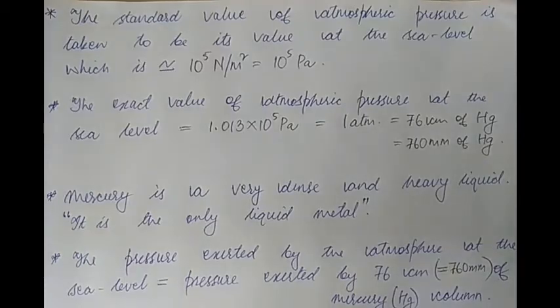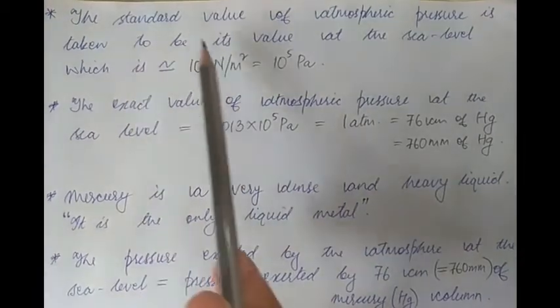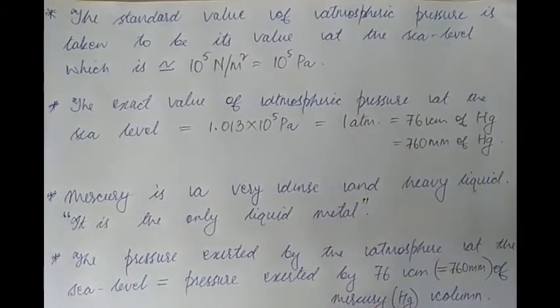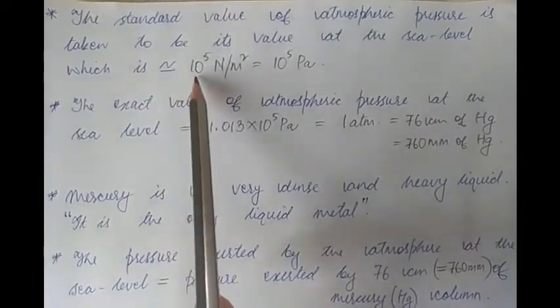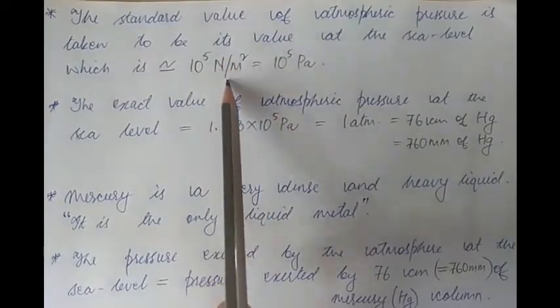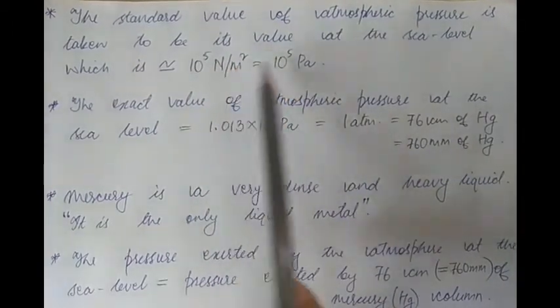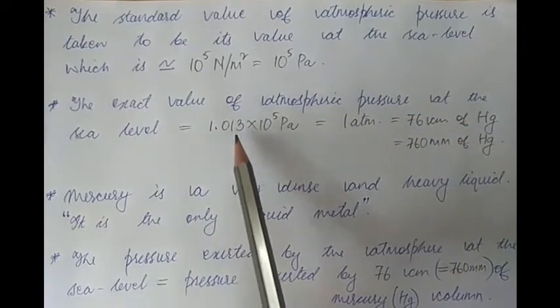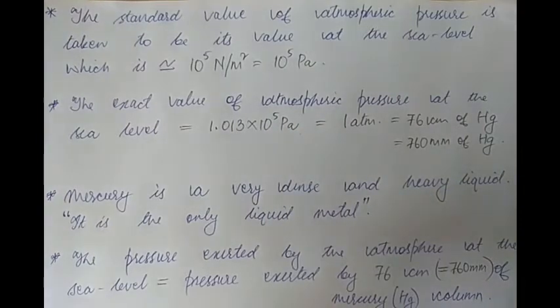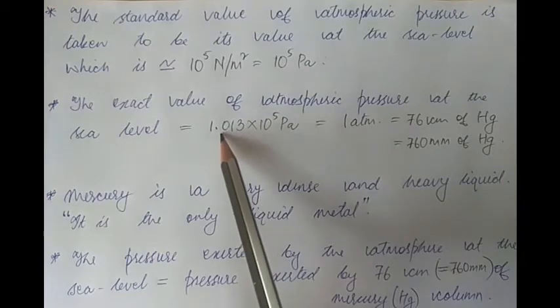Now let's talk about the value of atmospheric pressure. Since atmospheric pressure is maximum at sea level, the standard value is taken at sea level. It has been measured that atmospheric pressure at sea level is approximately 10^5 newton per meter squared. Since newton per meter squared is also called a pascal, this equals 10^5 pascals. The exact value is 1.013 × 10^5 pascals.